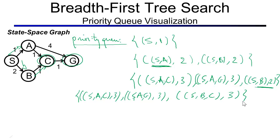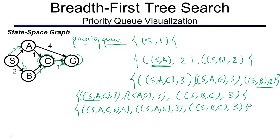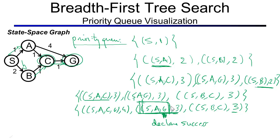The lowest priority number is now 3. Alphabetical tie-breaking puts S, A, C first, so we expand that. C has one successor G, giving S, A, C, G with a priority of 4; the other two — S, A, G and S, B, C — remain at priority 3. The next lowest are the 3's; S, A, G is alphabetically before S, B, C, so we take S, A, G. The last state is G — the goal state — so we declare success and return S, A, G as the path found by breadth first search.